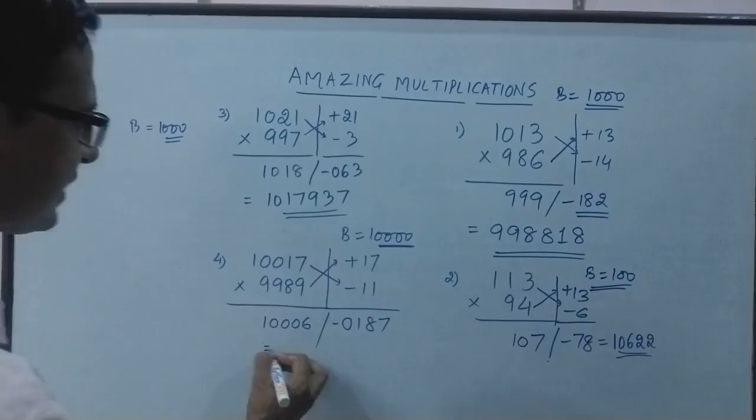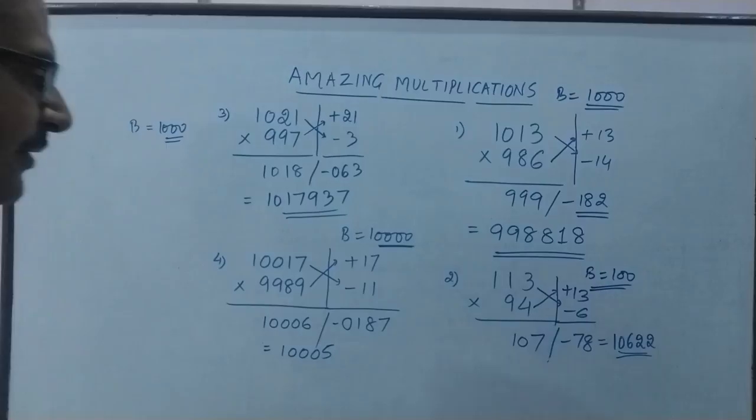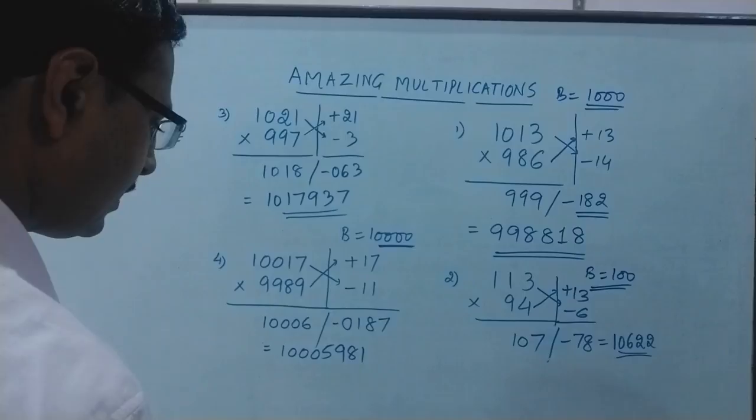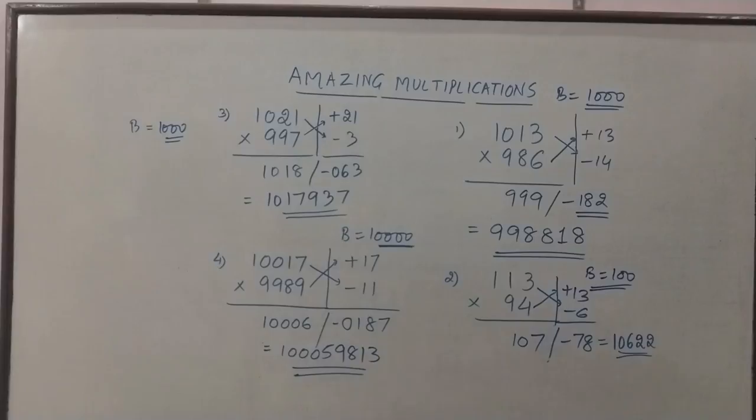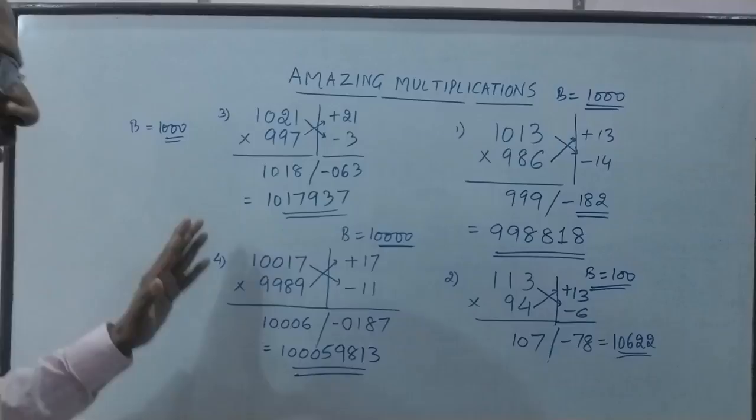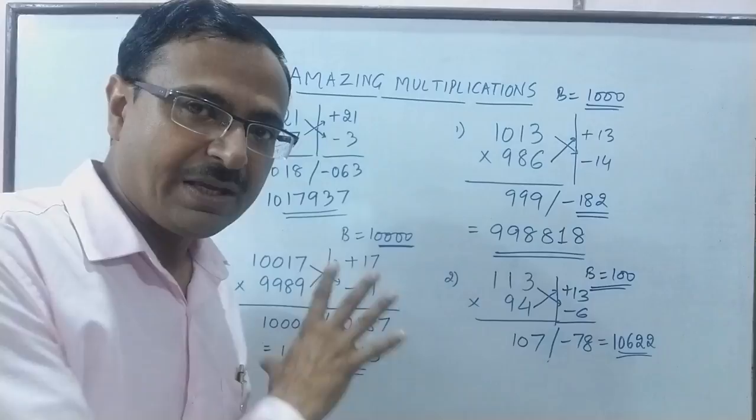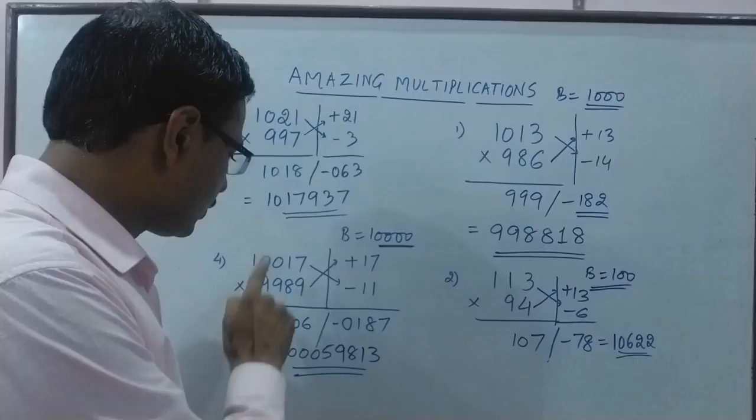Now in the final step you have your answer: 10,006 becomes 10,005 and all from 9 last from 10 so 9 minus 0 is 9, 9 minus 1 is 8, 9 minus 8 is 1 and 10 minus 7 is 3. Here is your nine digit product: 100,059,813 is the product of 10,017 and 9989. The method which I have told you will save at least—the time consumed during the application of this process will be only one fourth of the time you consume by traditional method.